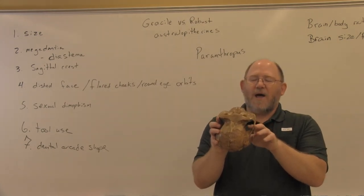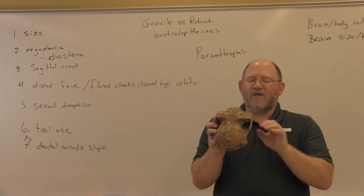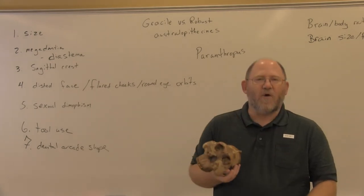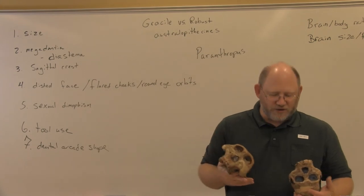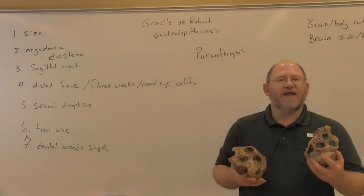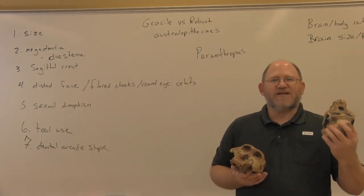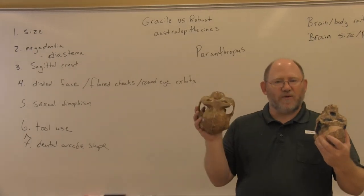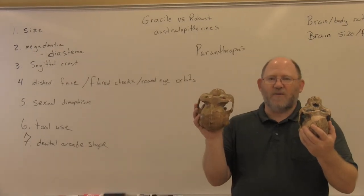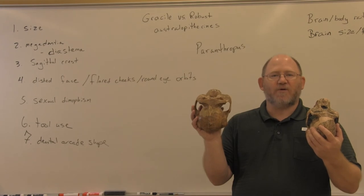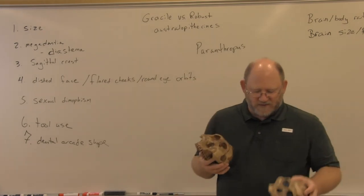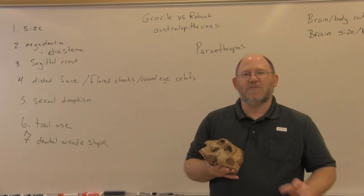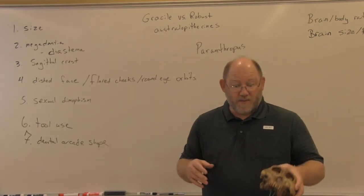There is a lot of space for really large chewing muscles. Gracile forms have large chewing muscles compared to us, but with the robust forms the difference is much more dramatic — the robust forms have muscle attachments similar to what you see in modern-day black bears.